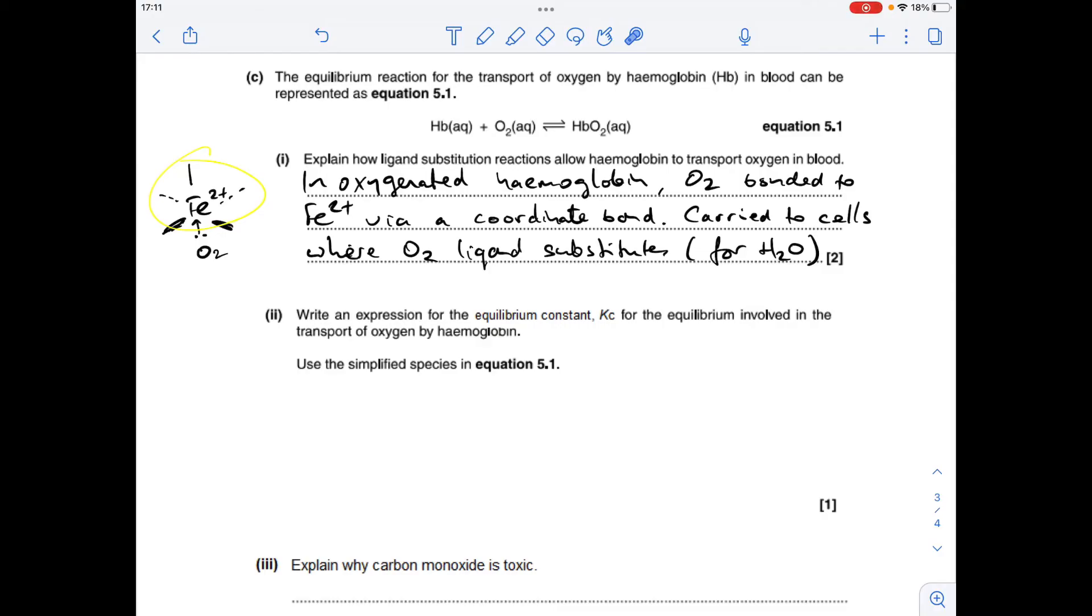Moving on to part C: explain how ligand substitution reactions allow haemoglobin to transport oxygen in the blood. I've got a little diagram to explain this. The oxygen ligand forms a coordinate bond with the Fe2+ ion in the haemoglobin, gets carried to the cells where the oxygen ligand substitutes for a water ligand.